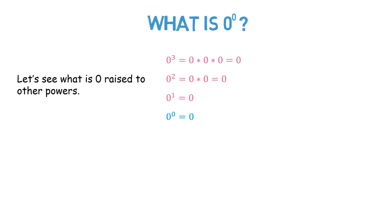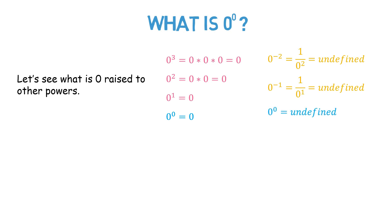Following the positive exponents, it seems like 0 raised to the power of 0 should also equal 0. But 0 to the negative second power is undefined, and the same is true for 0 to the negative first power. Following the negative exponents, it seems like 0 to the power of 0 should be undefined.